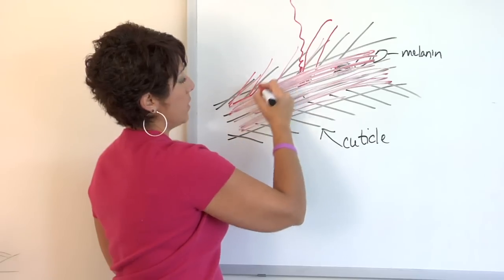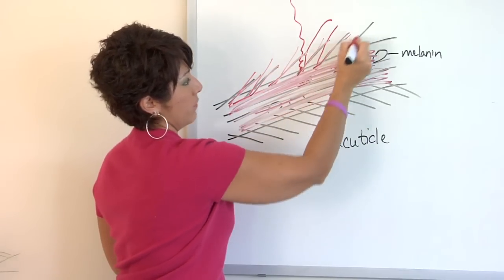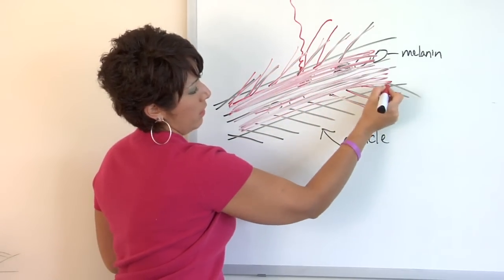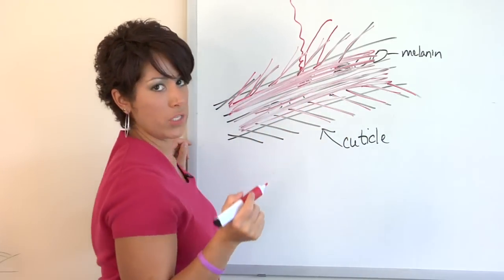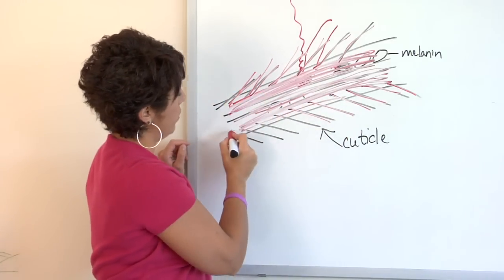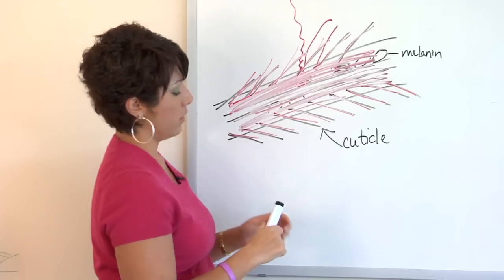And the cuticle is also stained with the color. So when you shampoo the hair, the cuticle then closes because of the pH of the water, and you are left with a colored hair shaft.